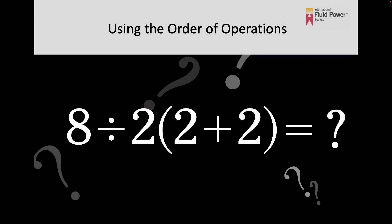Using the order of operations. Sometimes we are confronted by equations that look somewhat complex, such as the one shown. Eight divided by two, and then in parentheses, two plus two equals, well, what does that equal?